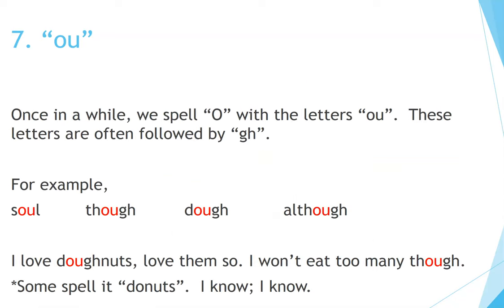Number 7: OU. Once in a while, we spell O with the letters OU. These letters are often followed by GH. For example: Soul, Though, Dough, Although. I love donuts — love them so. I won't eat too many, though.